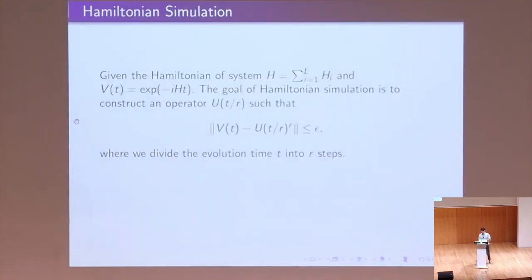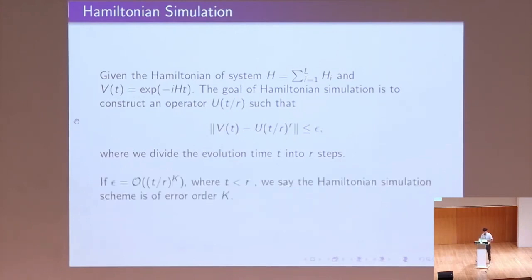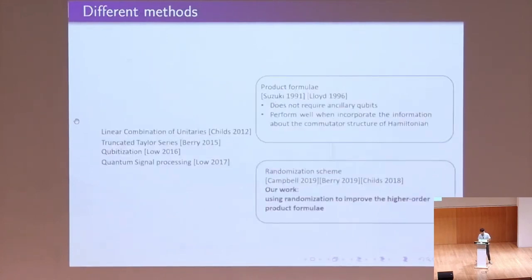Hamiltonian simulation seeks to construct an approximate unitary. We want to evolve our state from zero to T, splitting it into R steps, then constructing operator U to approximate V in terms of epsilon cost. If epsilon is at the order of (T/R) to the power of K, where T is smaller than R, we say that Hamiltonian simulation is of error order K. So far, there are several competitive methods, such as linear combination of unitaries, truncated Taylor series, qubitization, and quantum signal processing.